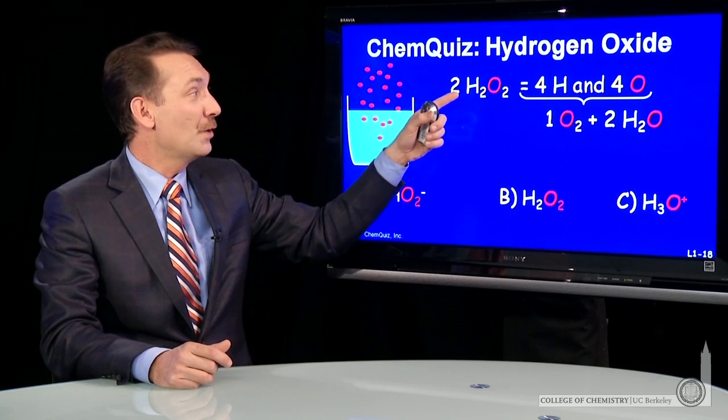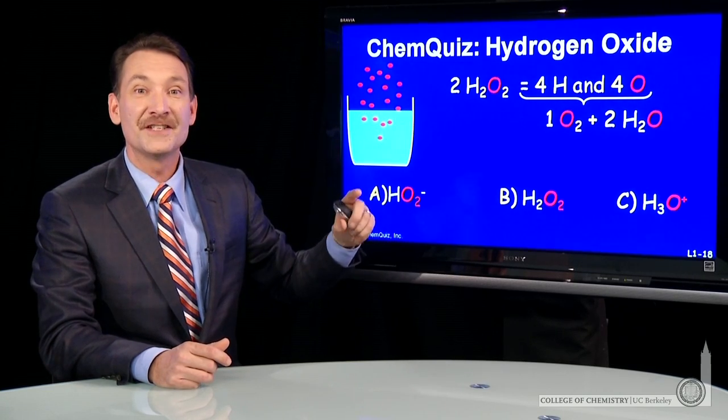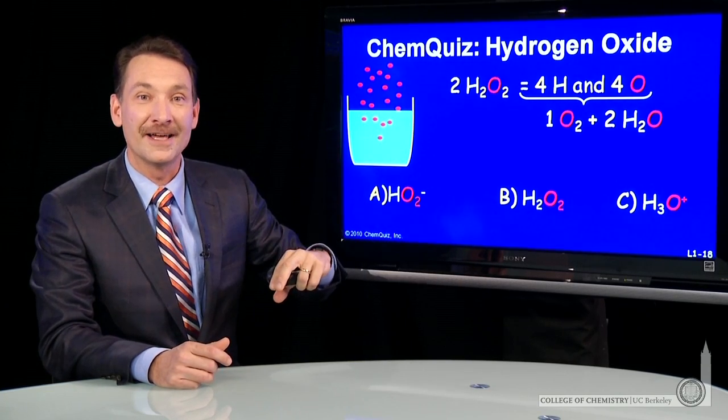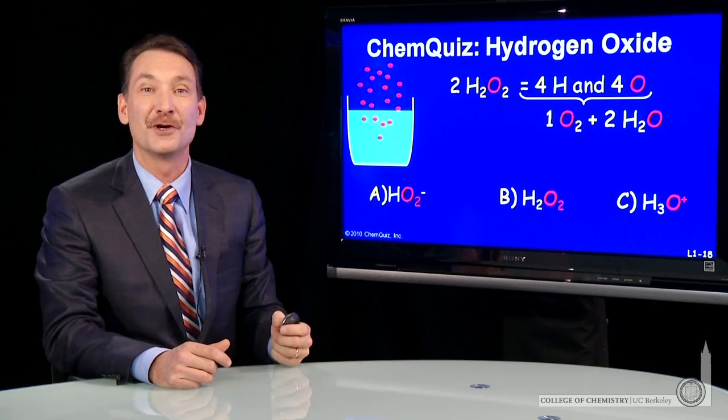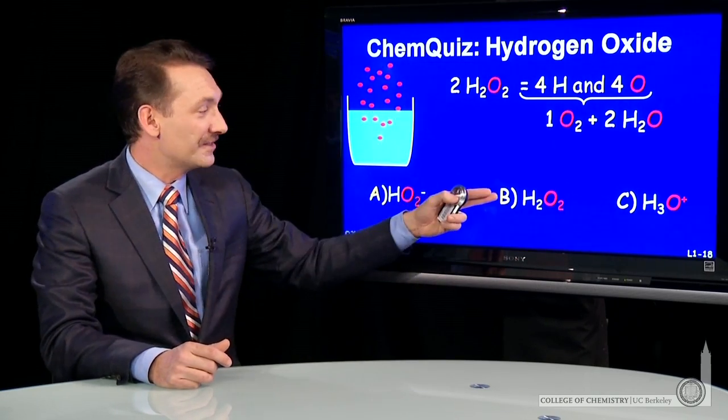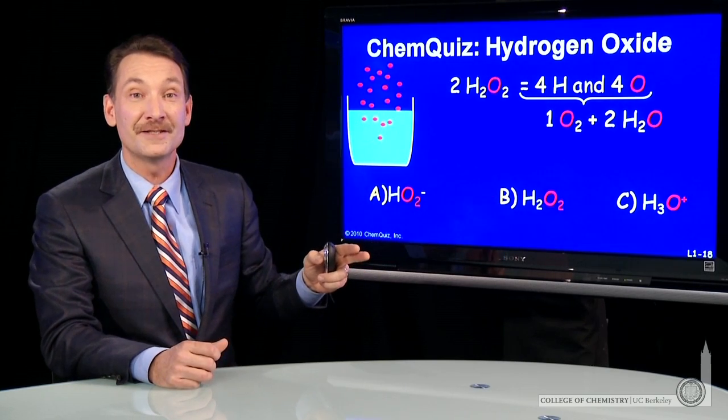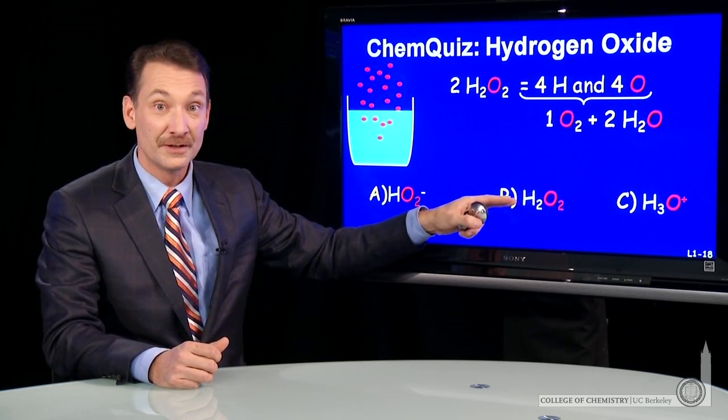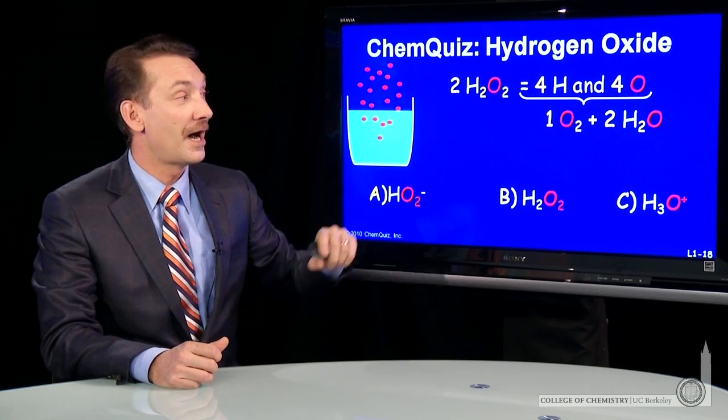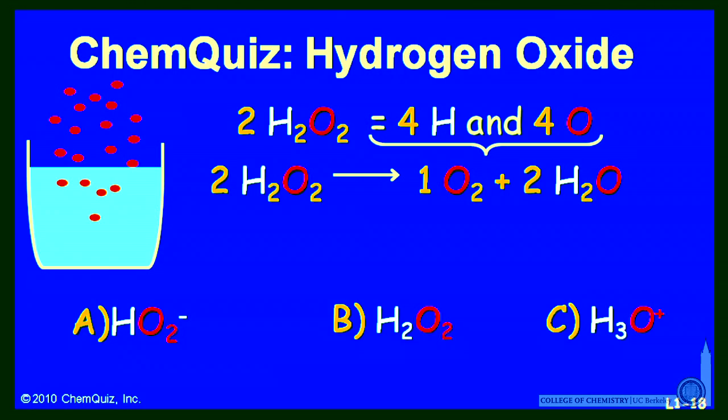So 2H2O2 has the appropriate numbers and kinds of atoms to form oxygen and pure water. So these other two, if you do the analysis, don't have the correct numbers and kinds in two moles to form oxygen and water. So the correct answer here is H2O2.